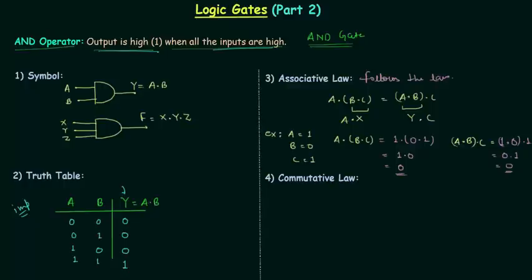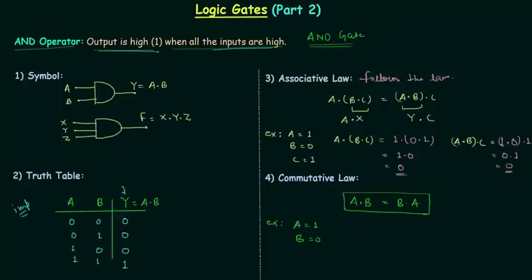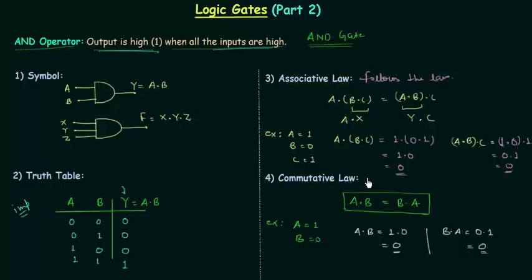Now we will move to the fourth point, that is commutative law. Commutative law says A AND B equals B AND A. We have to find whether AND gate follows the commutative law or not. Let's take A=1 and B=0. Left-hand side: A AND B = 1 AND 0 = 0. Right-hand side: B AND A = 0 AND 1 = 0. Left-hand side and right-hand side are the same. So AND gate follows the commutative law. AND gate follows both associative and commutative law.